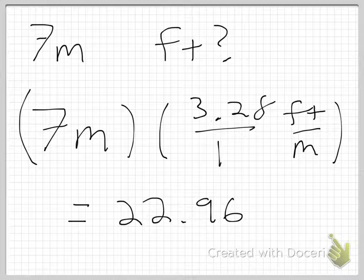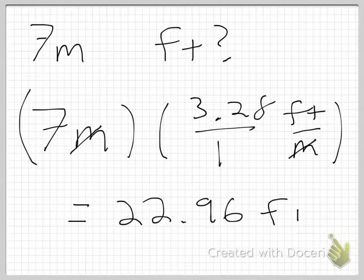But units, look what happens. I've got a meter in the numerator and a meter in the denominator. Those will cancel, and I'm left with just feet. So the answer to my question, 7 meters, works out to be approximately 22.96 feet.